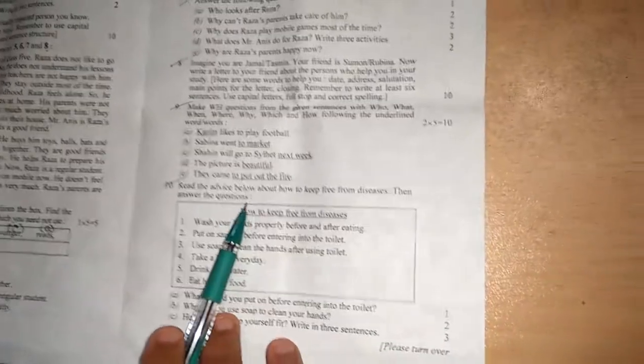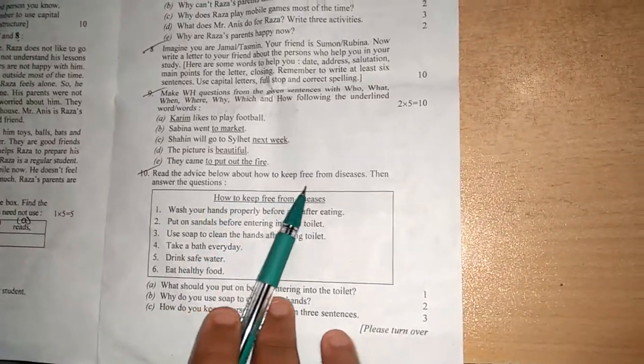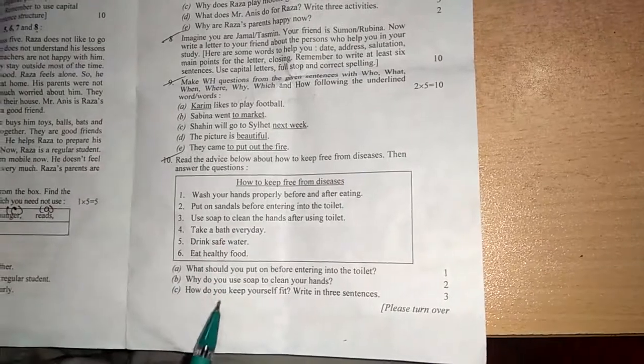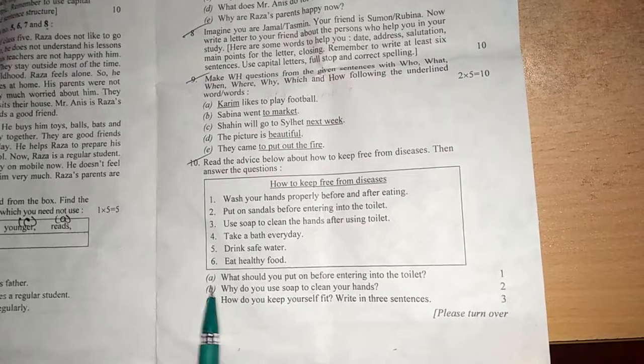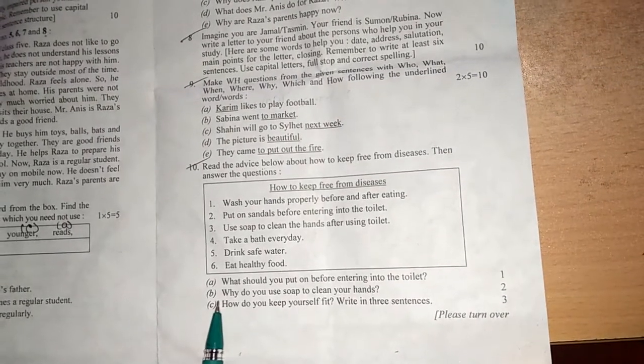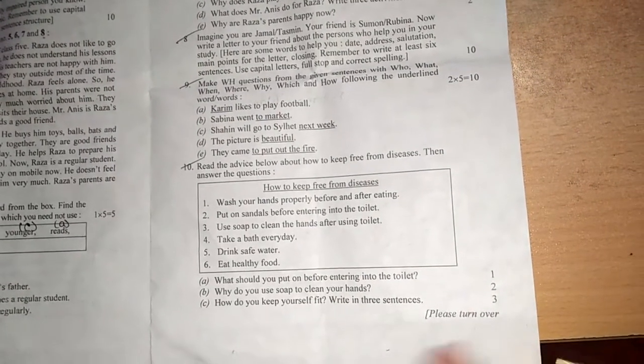Now number ten, read the advice below about how to keep free from diseases. This advice is true, how to keep free from diseases. And there are three questions. The first one contains one mark, the second one two, and the third one three.